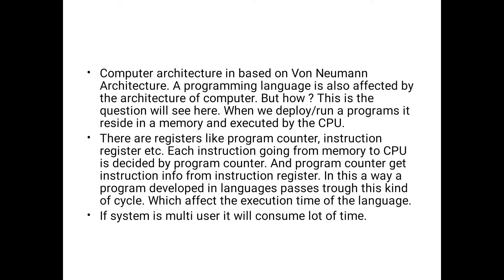When we run a program, it resides in memory and is executed by the CPU. From memory, we give instructions, all instructions are processed in the CPU, and we get the output from the CPU back to memory. The second point is there are registers like program counter and instruction registers. The program counter counts the programs and instruction registers hold the current instructions.